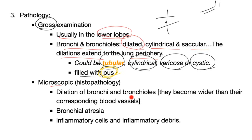Microscopically: dilatation of the bronchi and bronchioles — they become wider than the corresponding vessels. Normally in distal lung, the vessel is bigger than the bronchiole. With bronchiectasis it's the opposite: the vessel is tiny and the bronchiole is very wide. We call this the signet ring sign — like a signet ring used to stamp documents in ancient times.